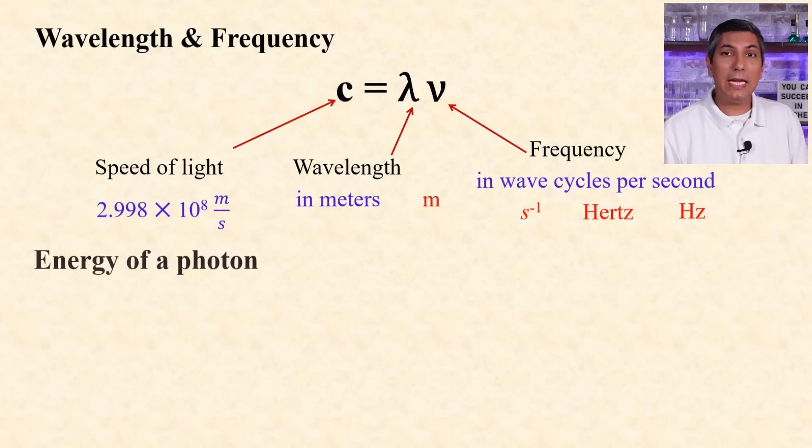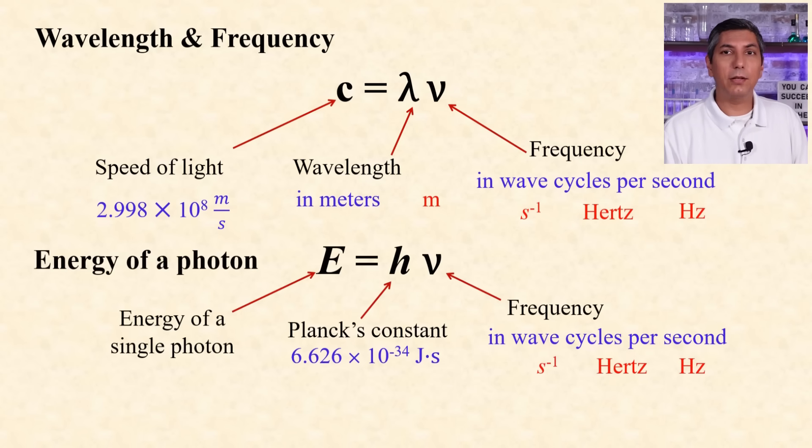We can use the equation e equals h nu to calculate the energy of a photon. E is the energy of the photon, h is Planck's constant, which is 6.626 times 10 to the negative 34th joule seconds, and nu is the frequency. If you're given wavelength, you'll need to use both equations, but it's a fairly simple calculation.